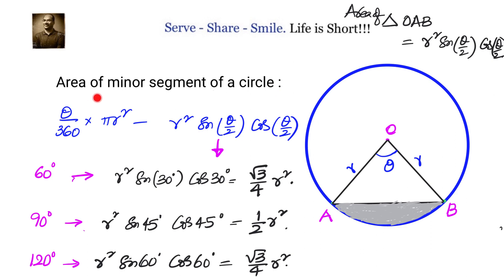Now, how to calculate the area of the major segment of a circle? The remaining part of the whole circle — that is the major segment — which equals area of circle minus area of minor segment.